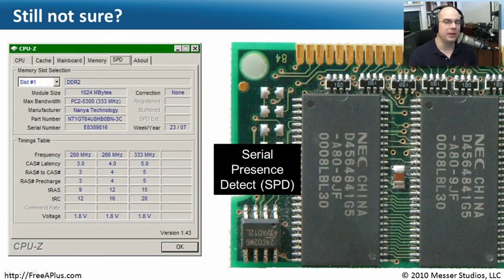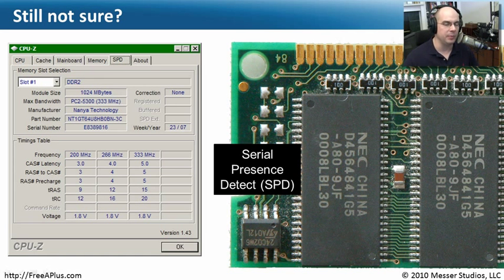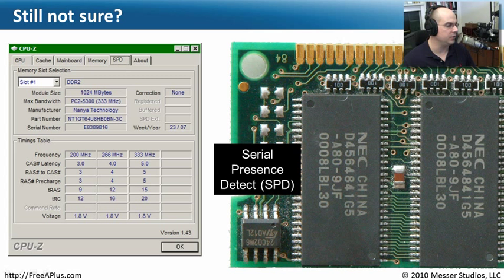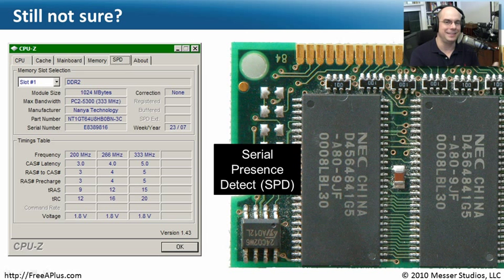If you want to confirm what memory is installed, every memory module has a tiny chip called the Serial Presence Detect (SPD) chip. It was added so you can query it with software. CPU-Z is a free utility — just search for it online — and under its SPD tab you can query the Serial Presence Detect and see exactly what the memory module is. For example, slot one shows DDR2, 1 GB, PC2-5300, with the manufacturer, part number, serial number, error correction support, and the frequencies and timings — all without even taking the cover off the computer.